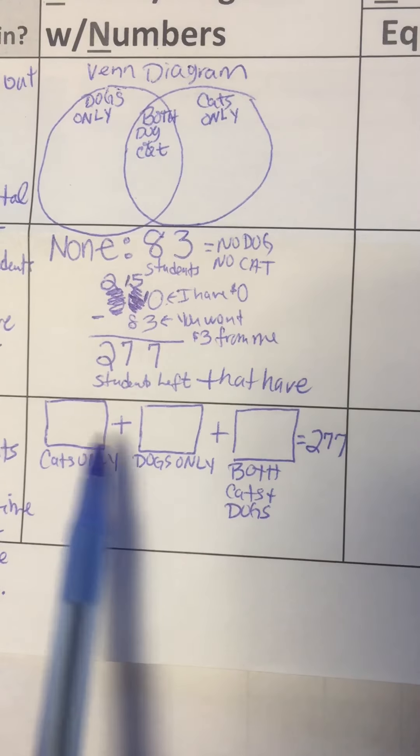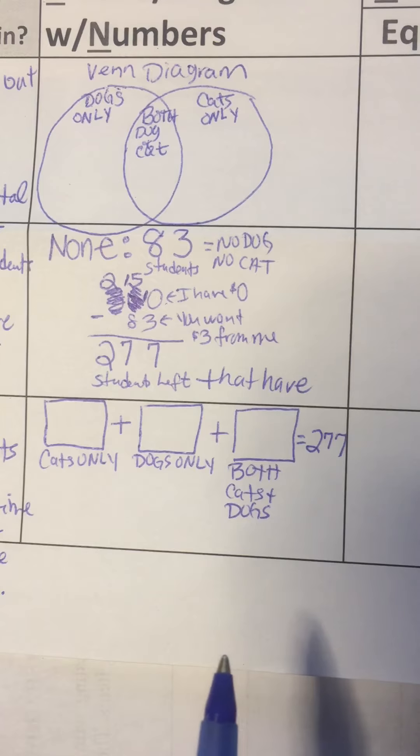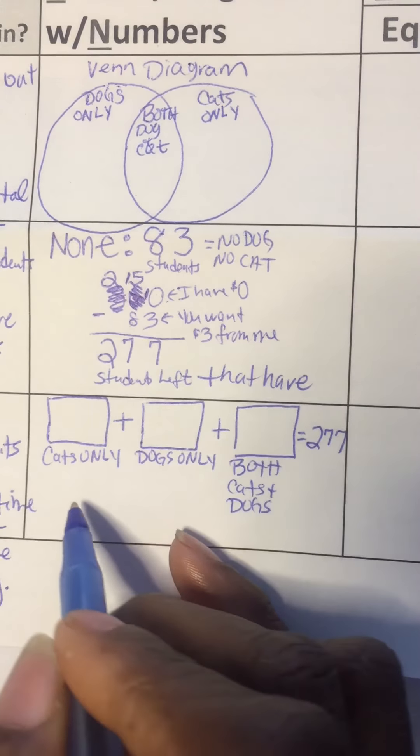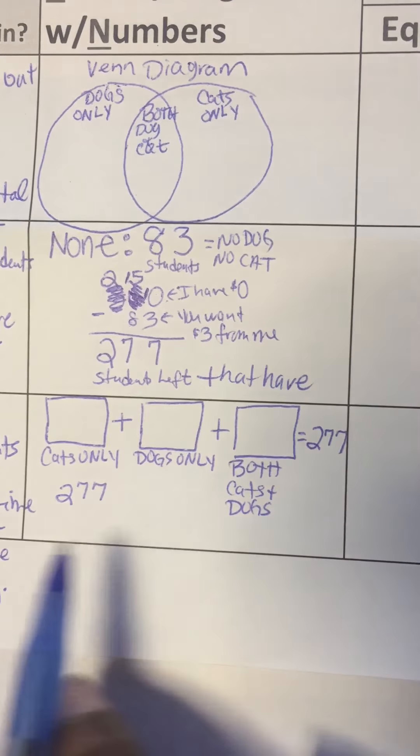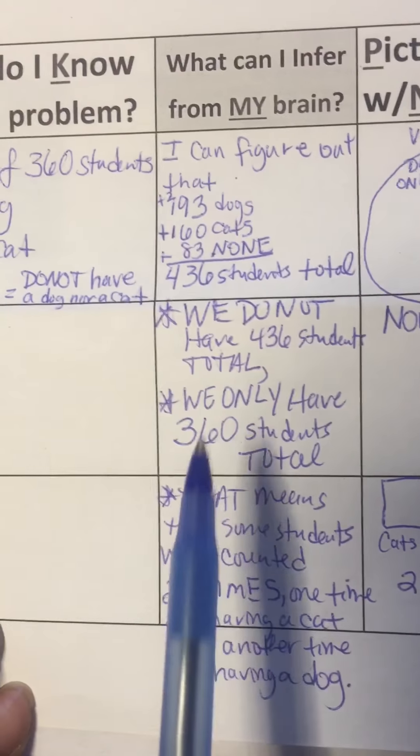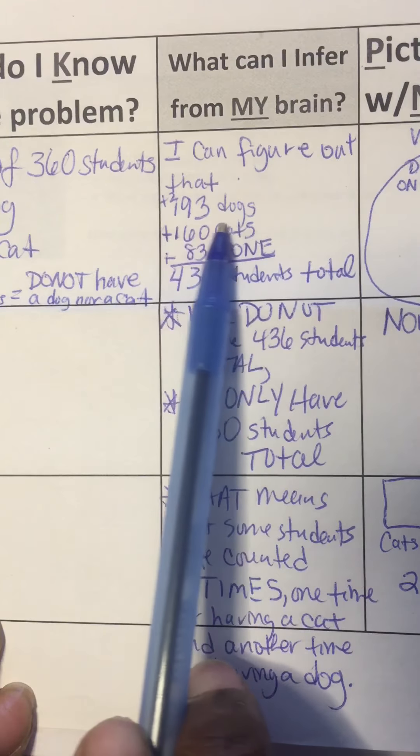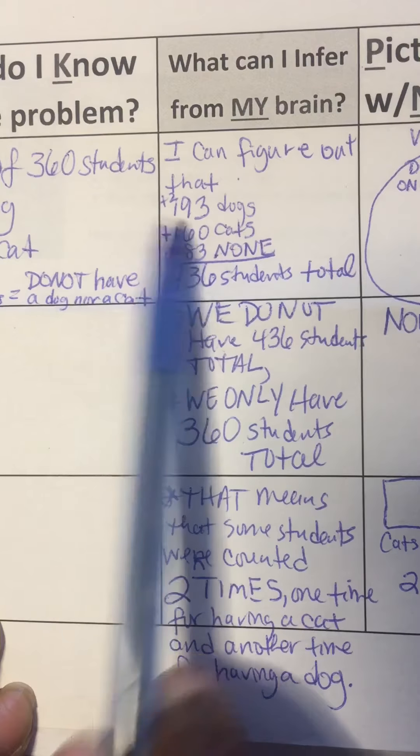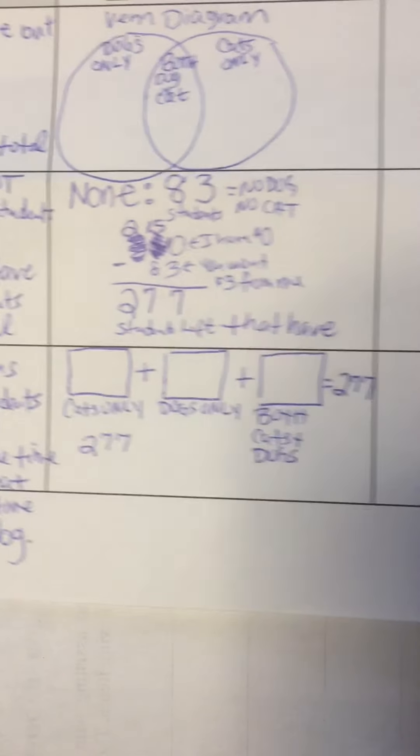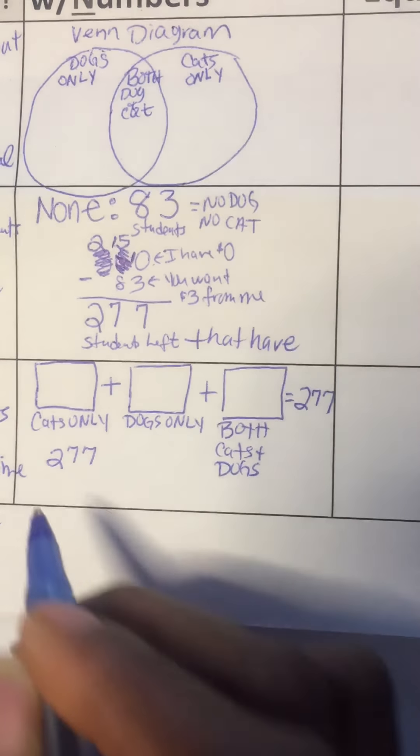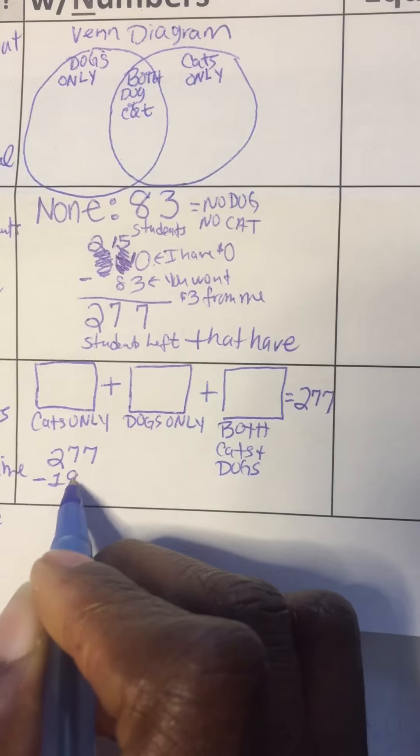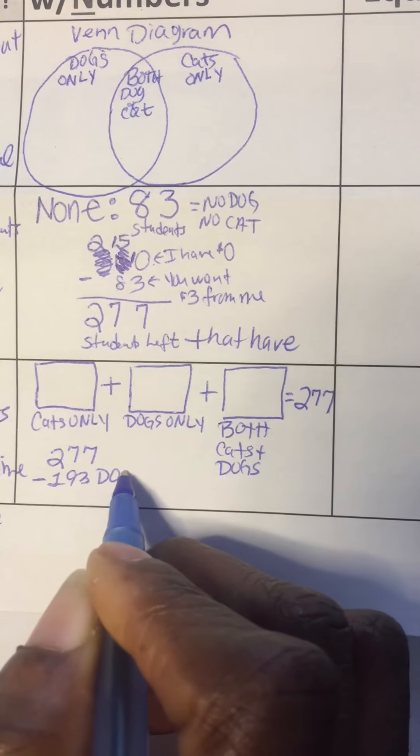So in order to find out each of these three numbers, I'm going to first subtract. To find out cats only, I'm going to do 277 minus the 193 for dogs that the problem originally gave me. So I'm going to do 277 minus 193. That's what they said, dogs.